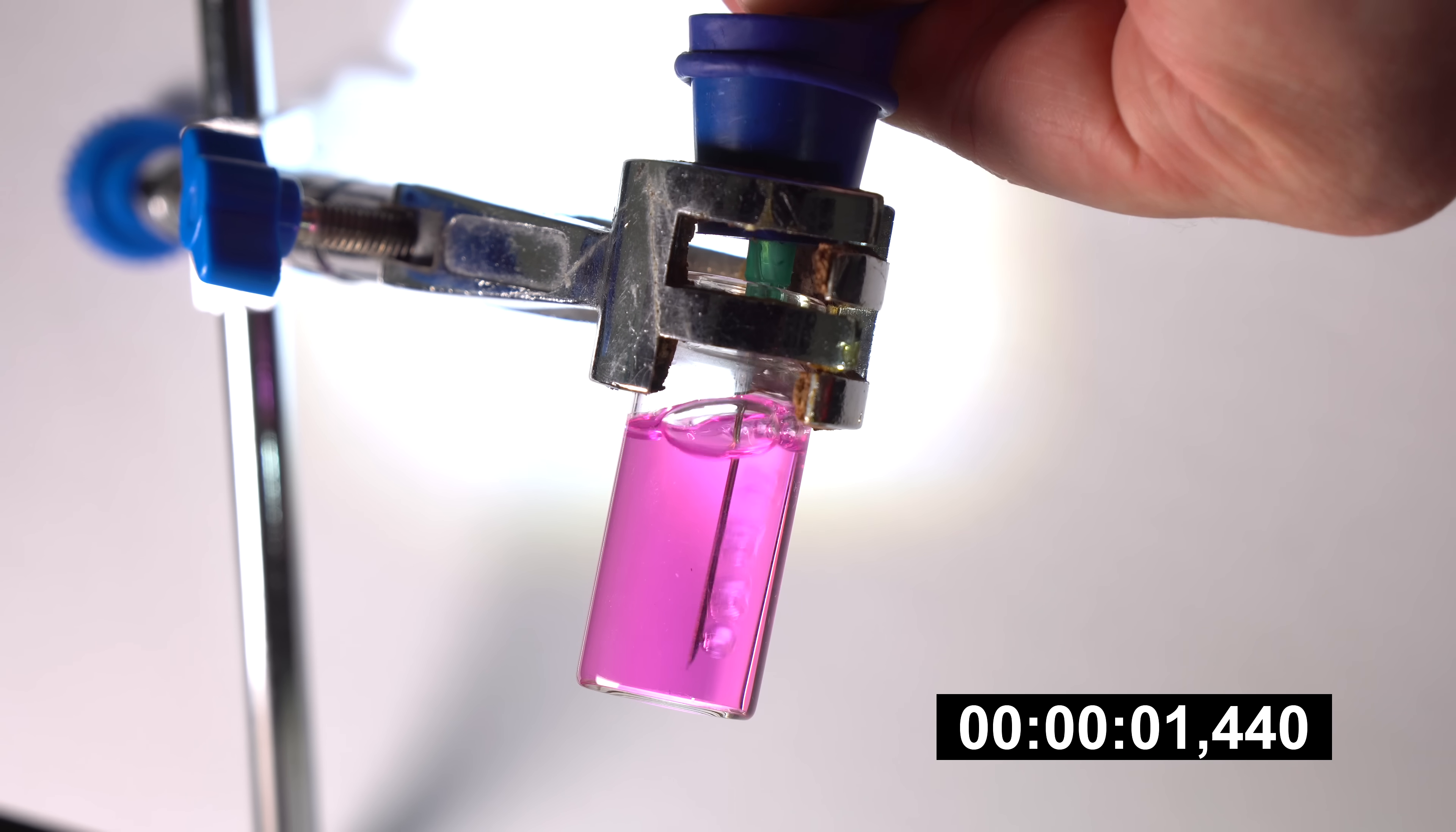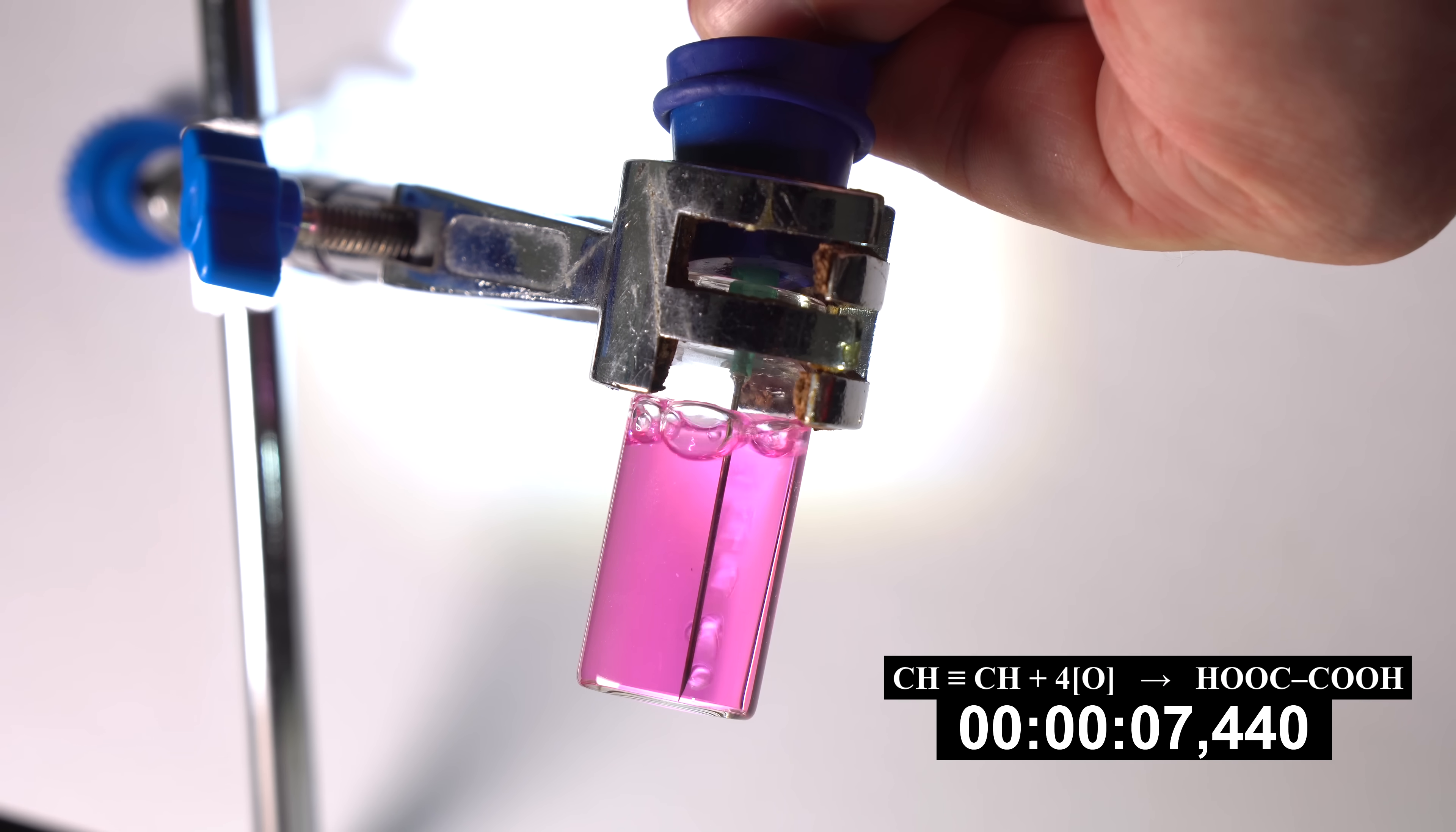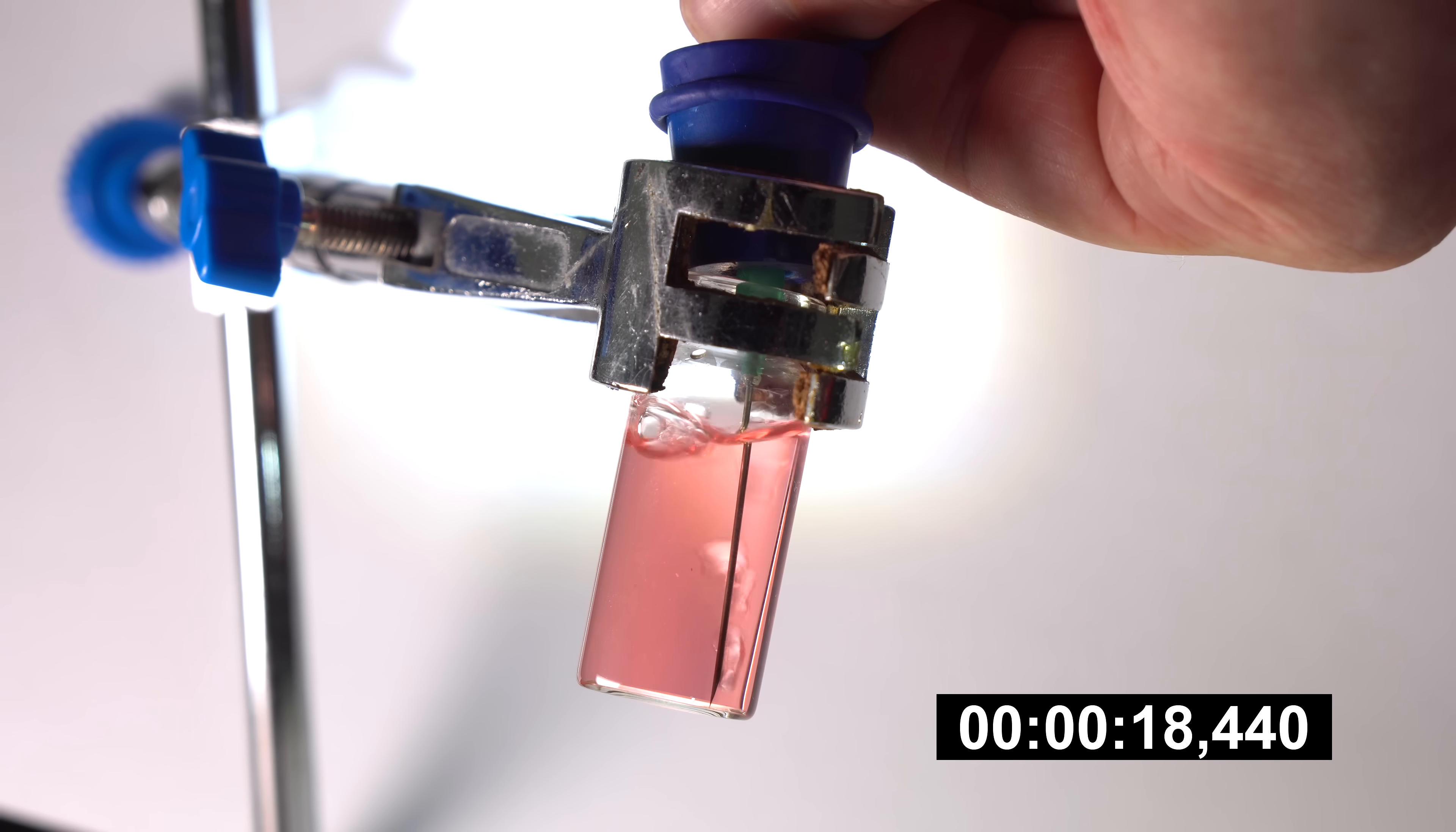First, I ran a classic reaction of oxidation of acetylene with potassium permanganate solution. In this reaction, the triple bond in the acetylene molecule breaks and oxalic acid is produced as a product of oxidation. This reaction can run for about 20 seconds, 26 seconds to be precise.